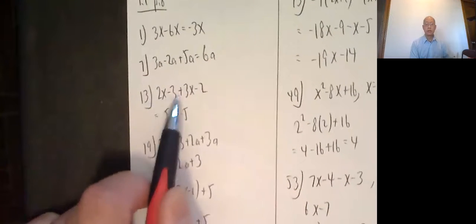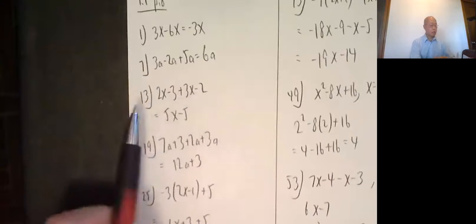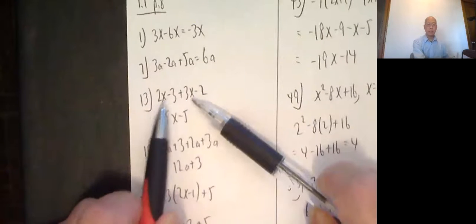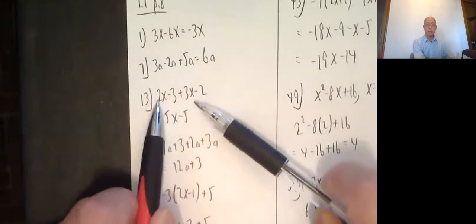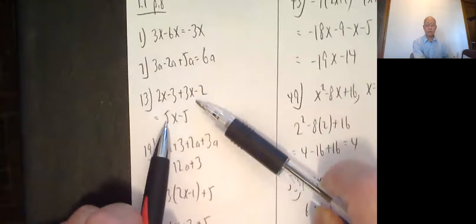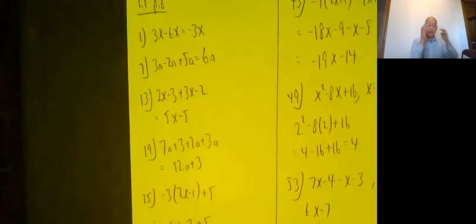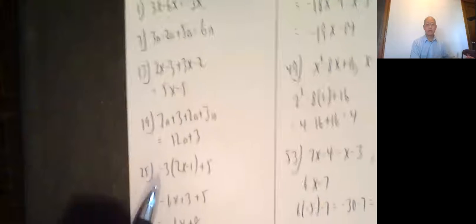13, 2x minus 3 plus 3x minus 2. I can combine the x's with the x's and then the numbers with the numbers. So 2x plus 3x gives me 5x. Negative 3 and a negative 2 make a negative 5. So the answer is 5x minus 5.